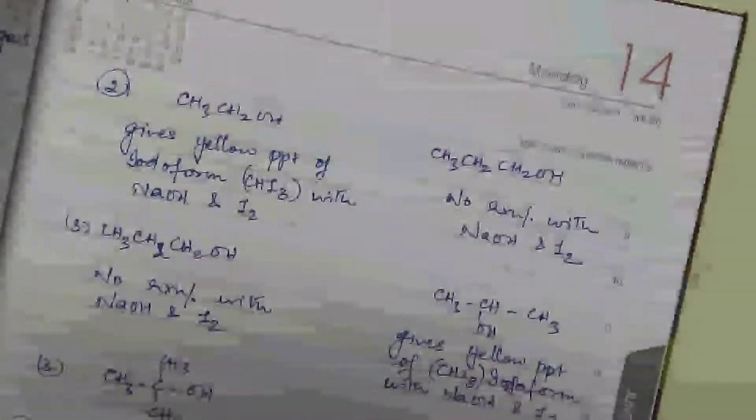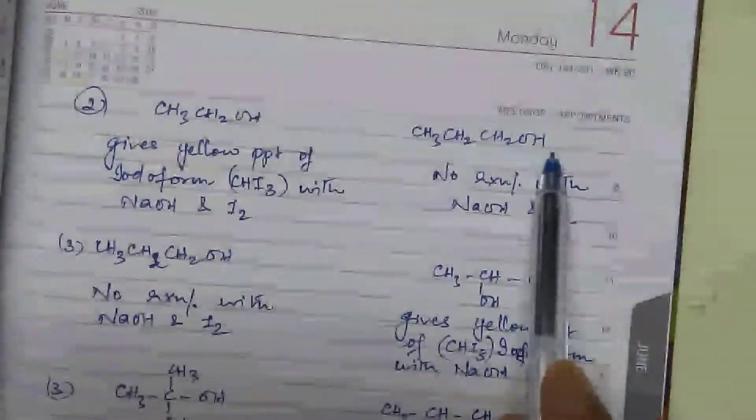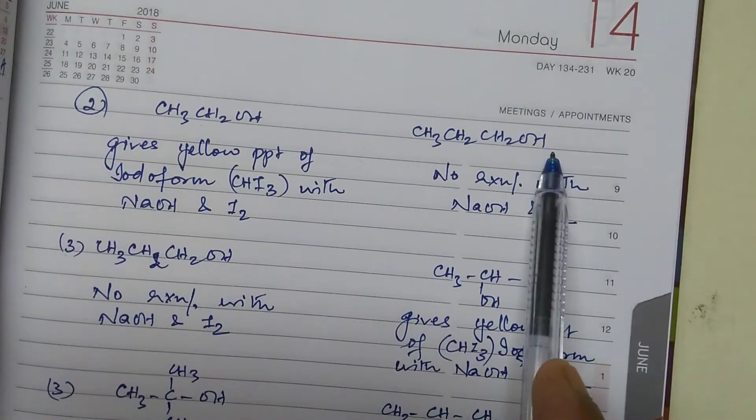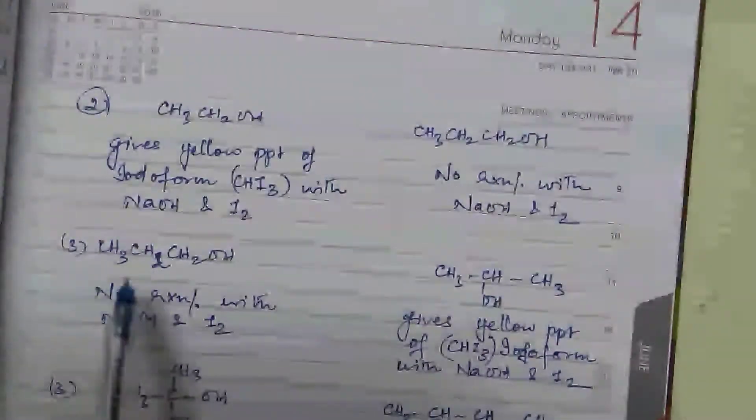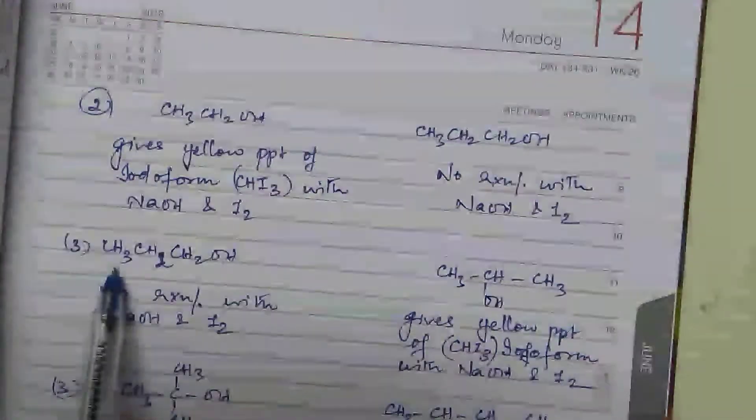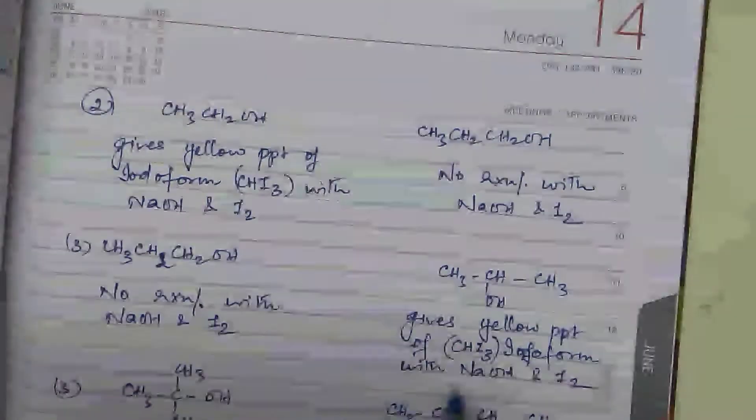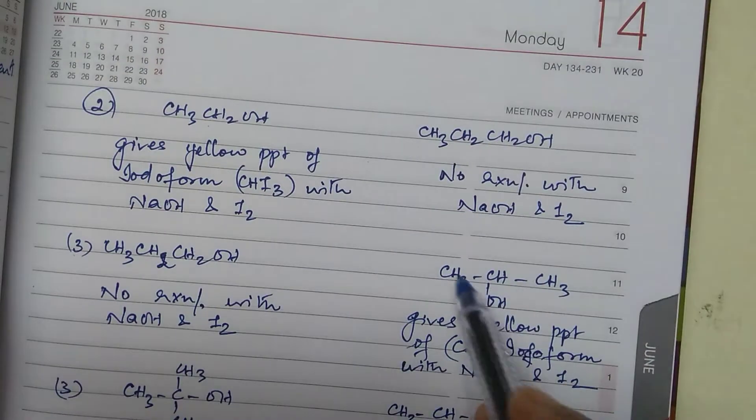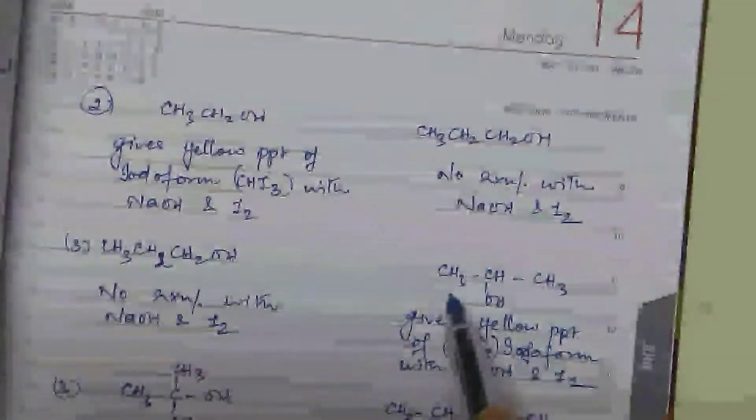Now supposing you have, see this is ethanol, this is propanol. I told you primary alcohols, so this will give yellow precipitate of iodoform with sodium hydroxide and iodine whereas propanol does not show any reaction. Same way if you are asked to distinguish between propanol and propan-2-ol. Propanol does not give, I told you only ethanol will give, so no reaction. And propan-2-ol gives yellow precipitate of iodoform with NaOH and iodine because it is having this group. I told you functional carbon ke saath agar CH3 attached there, it will give iodoform test.